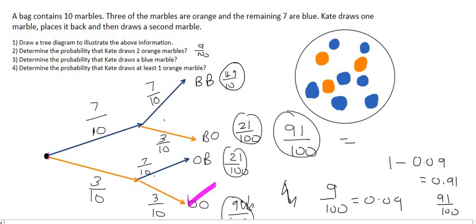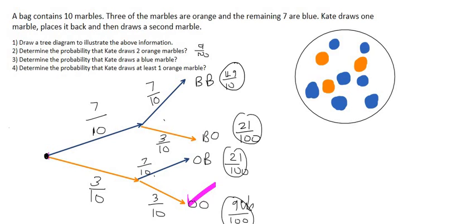So instead of calculating three different branches, we only calculated one and then just subtract. So let me explain that once more. All four of those branches should add up to one, which is a hundred over a hundred. The bottom branch is nine out of a hundred. So if that's nine out of a hundred, then it means that these three branches over here should give us 91 out of a hundred.